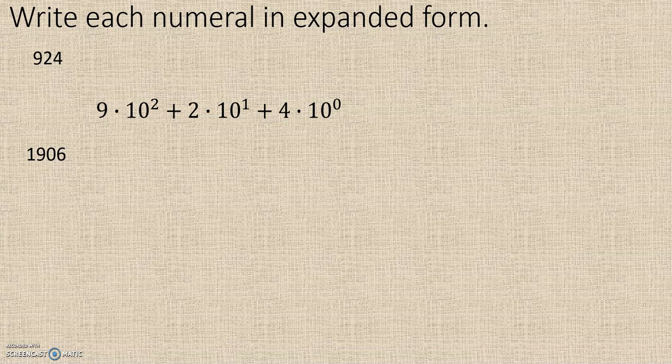1,906. Start with the 1,000, so it's going to be 1 times 10 to the third. The 9 is in the hundreds place, so it's plus 9 times 10 to the second. 0 times 10 to the first, plus 6 times 10 to the 0.